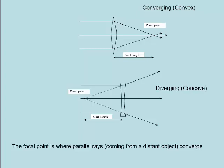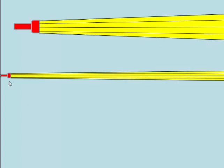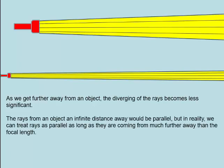The focal point is where parallel rays from a distant object will converge. What do we mean by a distant object? Here I've got a torch and you can clearly see the light is diverging — spreading out, so the rays are not parallel. But if we go further away, the rays are almost parallel. As we get further away from the object, the divergence becomes less significant. Rays from an infinitely distant object would be parallel. In reality, we can treat rays as parallel as long as they're coming from much further away than the focal length — for example, if the focal length is 15 centimetres and the object is 10 metres away, that can be taken as effectively infinity.